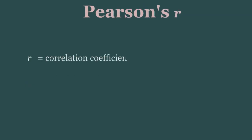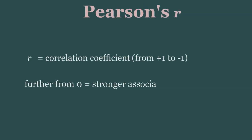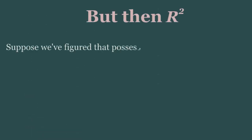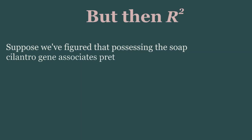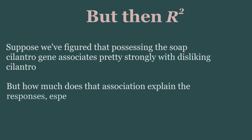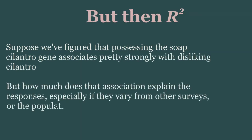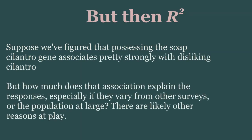First, we have Pearson's r. R is a correlation coefficient that can range from negative 1 to positive 1, and simply states how related our variables of interest are. The further away from 0 r is, the stronger the association. However, Pearson's r doesn't really tell us directly how much variability our correlation exactly explains.